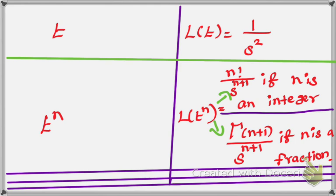It is useful to you. All the details are in the description box — L of 1, L of e power minus a t, L of sin a t, L of cos a t, L of sinh a t, L of cosh a t, L of t, L of t power n. You have to memorize all the formulas; it will be easier to solve the problem.